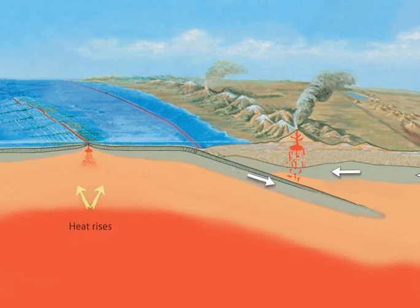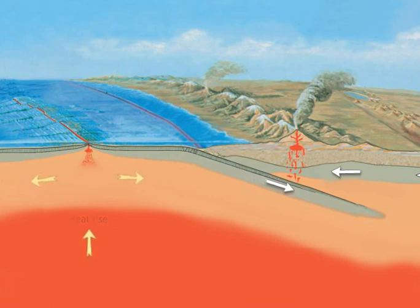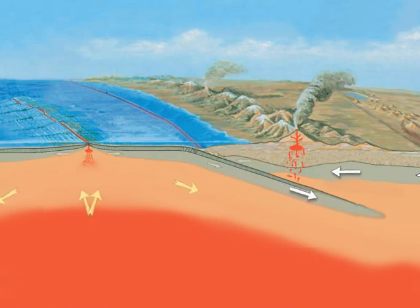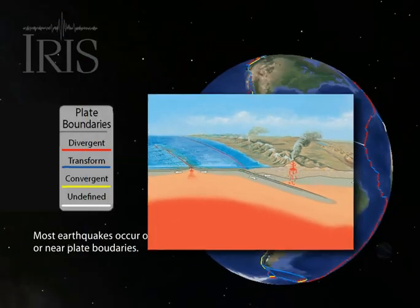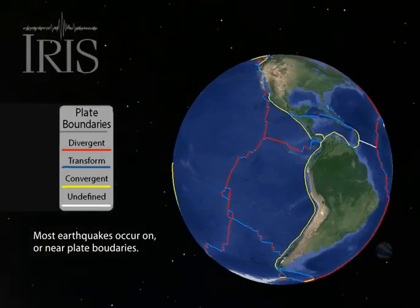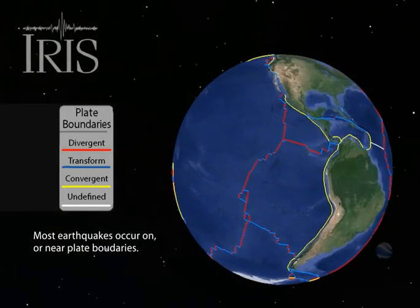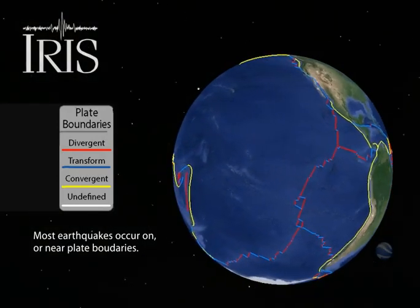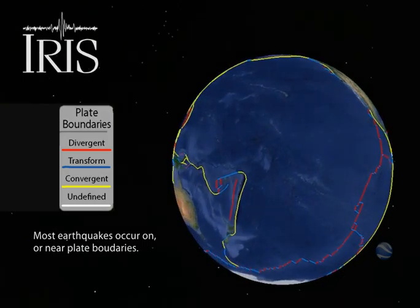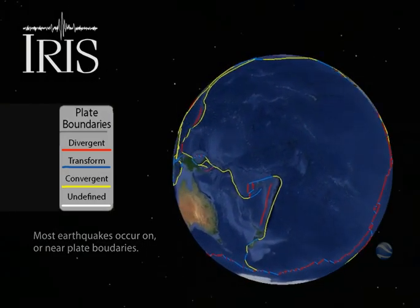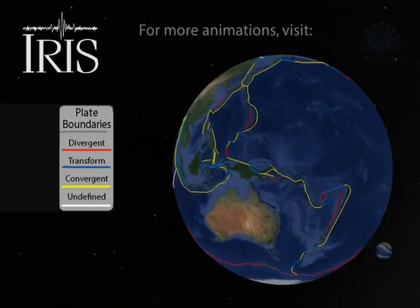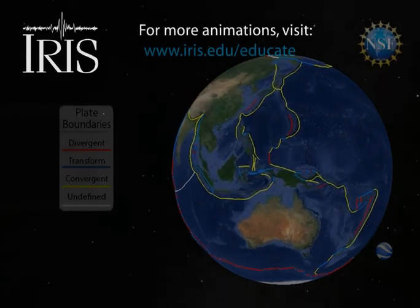Earthquakes, volcanoes, and the Earth's magnetic field are all the consequence of the Earth trying to lose heat as it converts some of the thermal energy into mechanical energy in the process. Without the tremendous heat being released from the interior of the Earth, we would not have had the mechanism to drive plate tectonics. And without earthquakes, we may not have had a way to see so deep into the Earth.